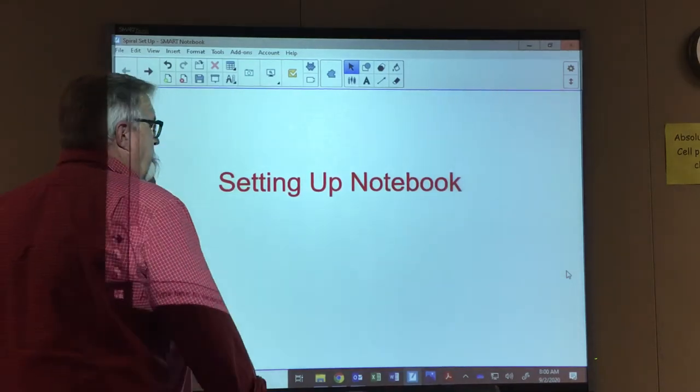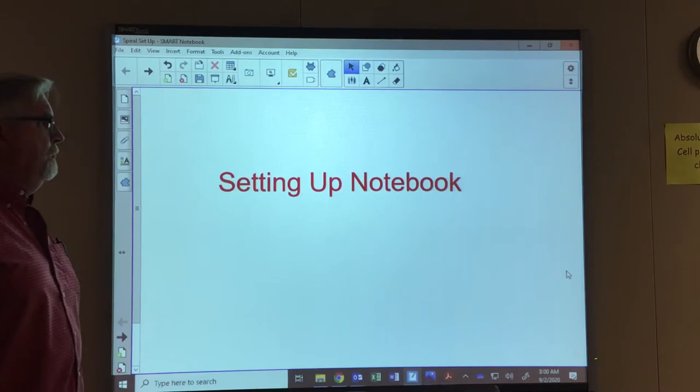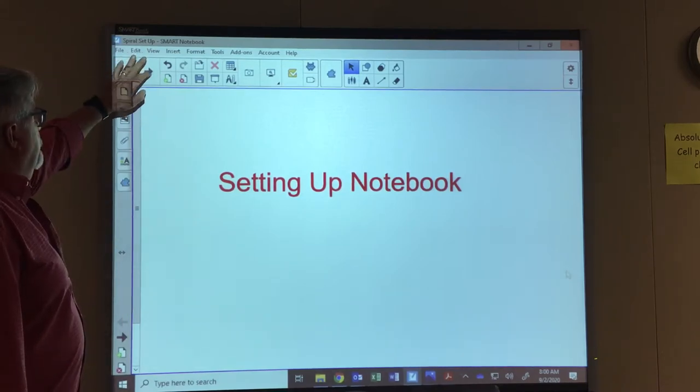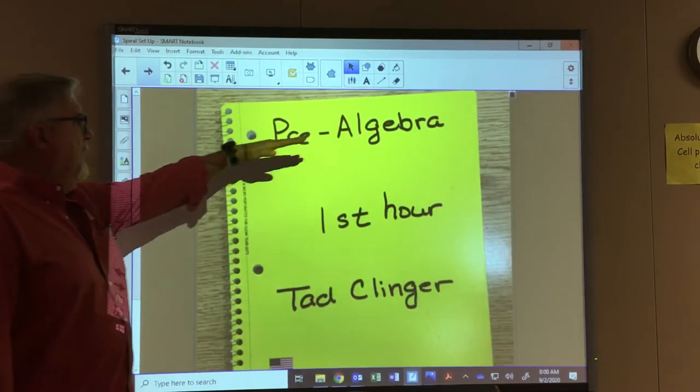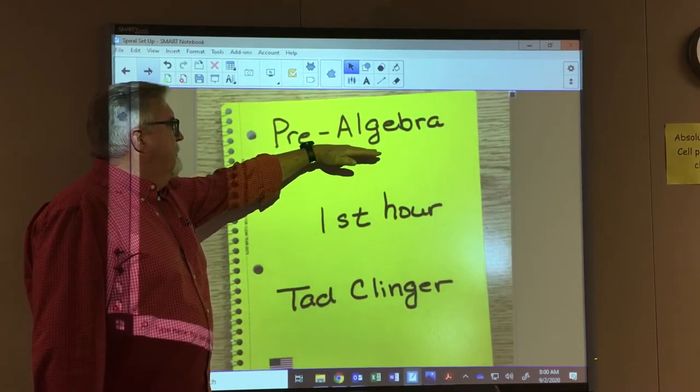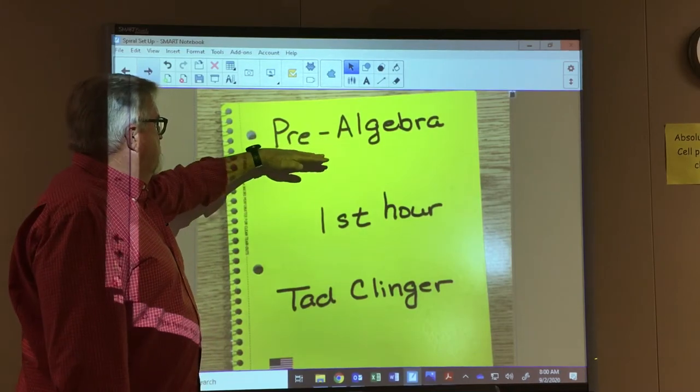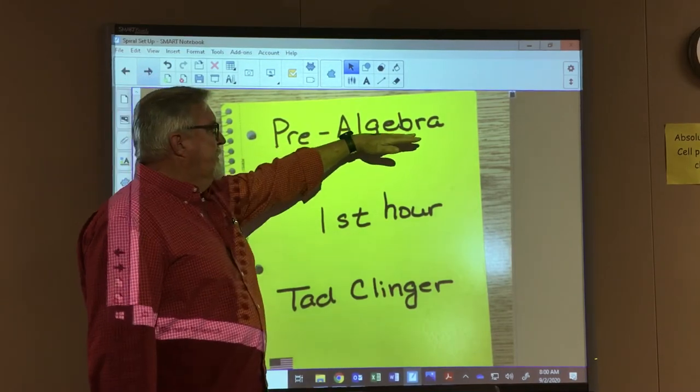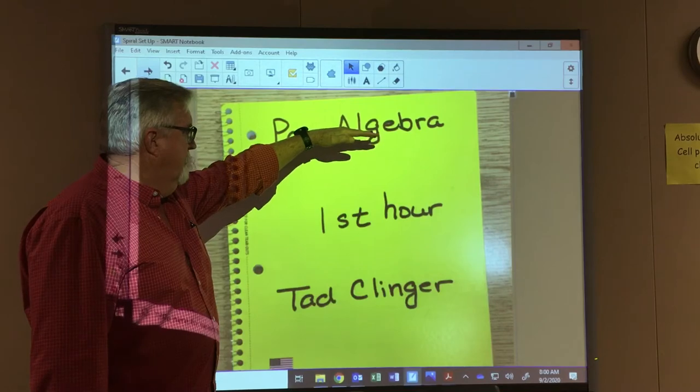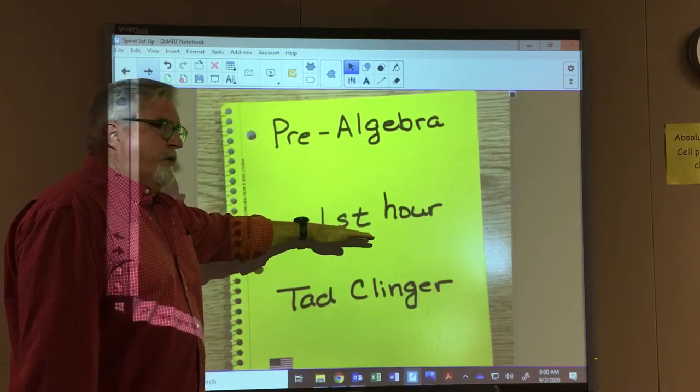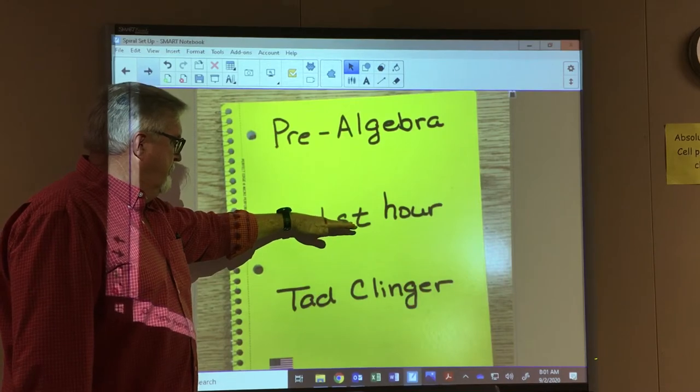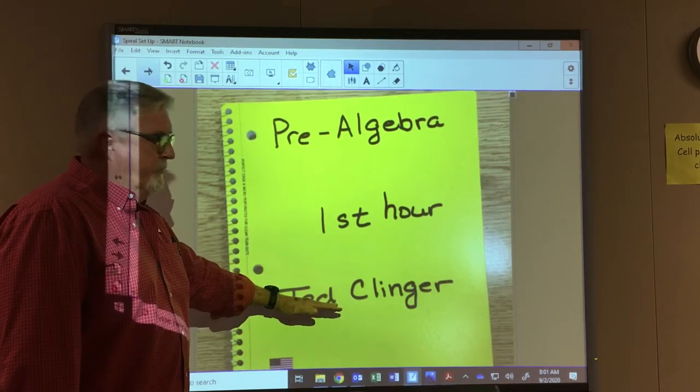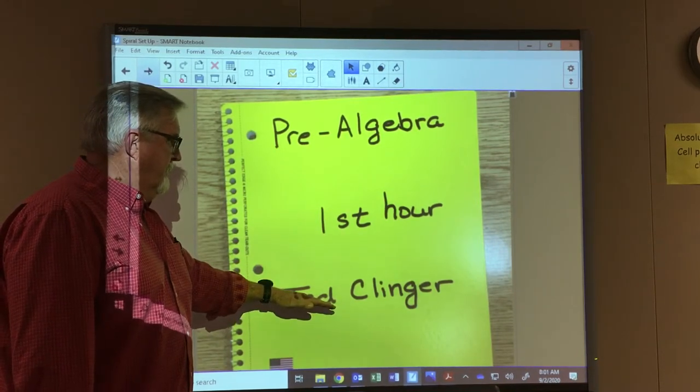Okay, today I want to run quickly through how to set up our notebook for the year. First thing we need to do is label our notebook at the top. I'd like you to write your class—I just as an example use pre-algebra. If you're in algebra 1, you'd write algebra 1 there. Whatever hour you have math class, that's the hour you put, and then don't put my name, put your name.